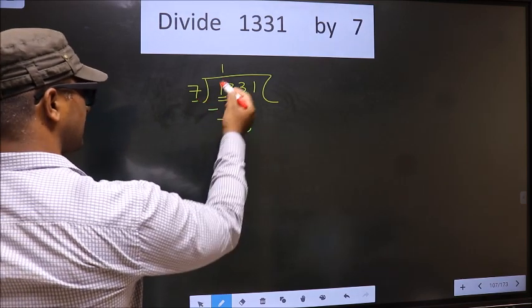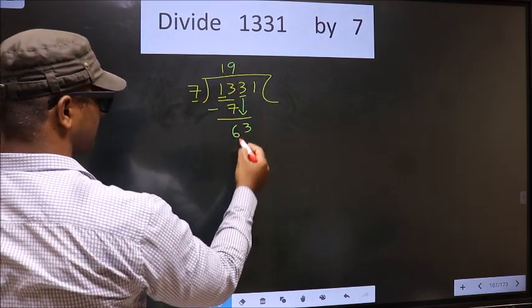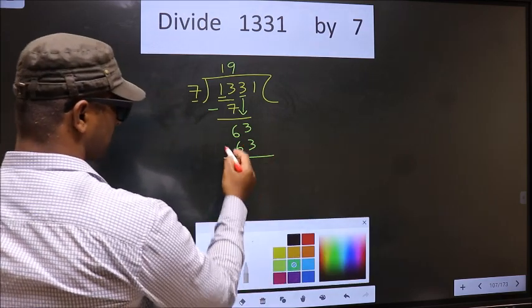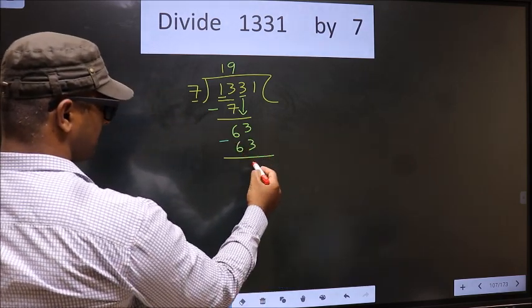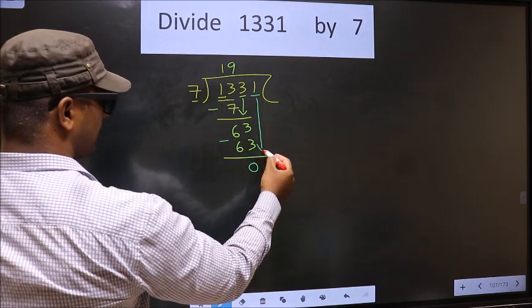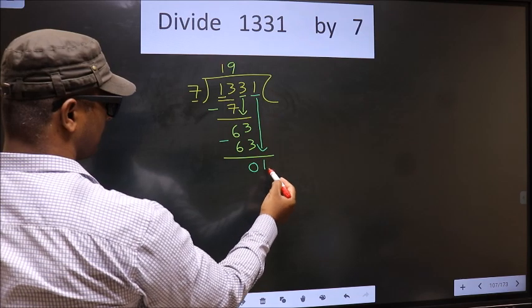So 63. When do we get 63 in 7 table? 7 nines is 63. Now you subtract. 63 minus 63 is 0.